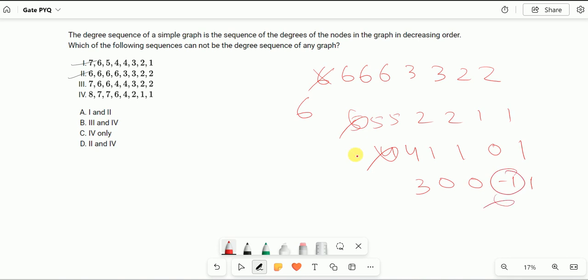If you take the fourth one, that is 8, 7, 7, 6, 4, 2, 1, 1, and solve this, then you will get minus 1 at the end. So this is also not a degree sequence of a simple graph.